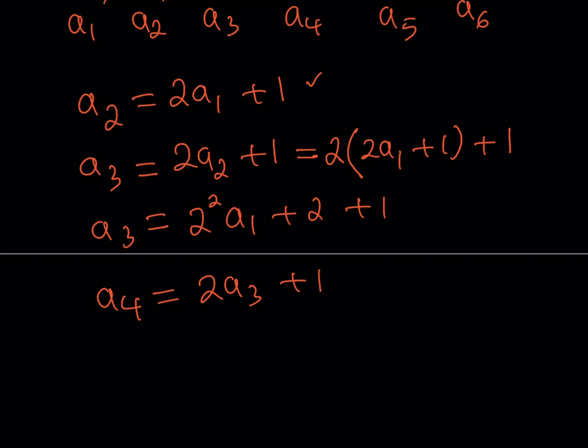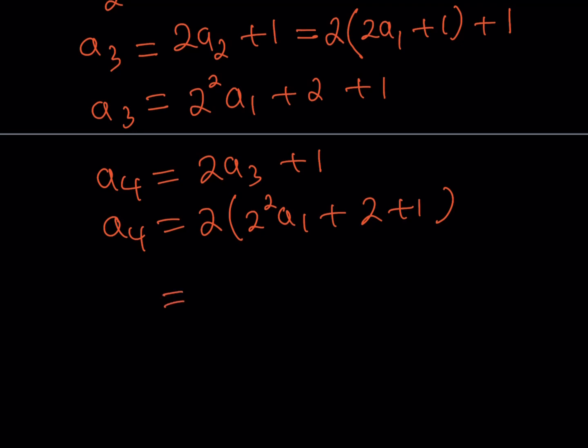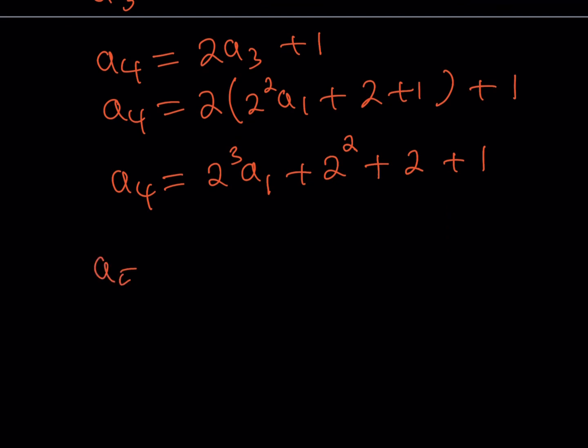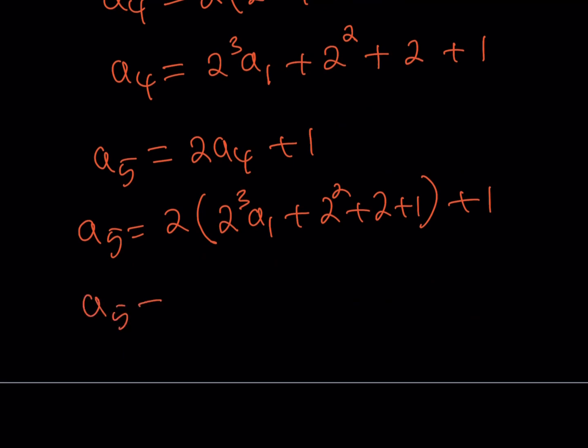A4 is going to be 2 times A3 plus 1. If you replace A3 with 2 squared A1 plus 2 plus 1, when you distribute, 2 times 2 squared is 2 to the third times A1, then 2 times 2 is 2 squared, and 2 times 1 is 2. Don't forget that after multiplying by 2, we always have to add 1, so that's going to be plus 1. You see the pattern? A5 is equal to 2 times A4 plus 1. If you distribute, you're going to see that this is 2 to the fourth A1 plus 2 to the third plus 2 to the second plus 2 plus 1.